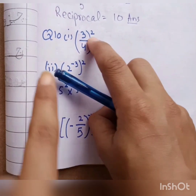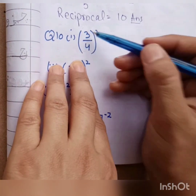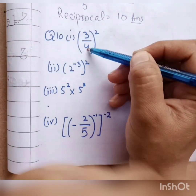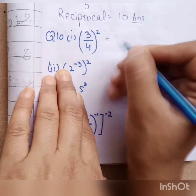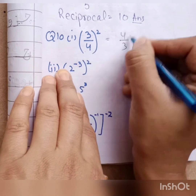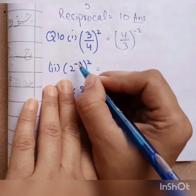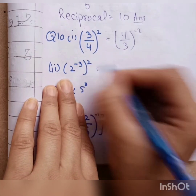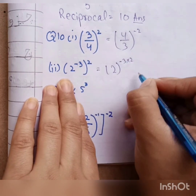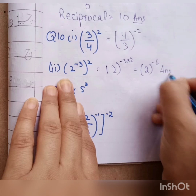First, we have 3 by 4 power 2 — convert to negative power. Just as we convert negative to positive by changing numerator and denominator position, the same way to convert positive to negative we change the numerator and denominator position. So we multiply: minus 3 multiply by 2, which gives us minus 6. The answer is minus 6.